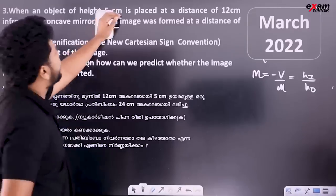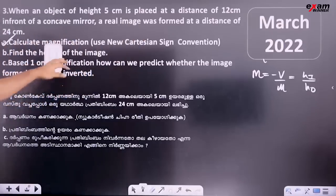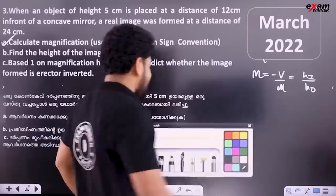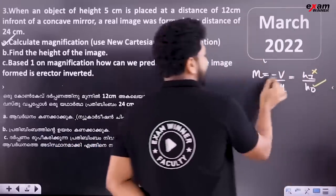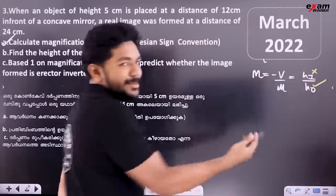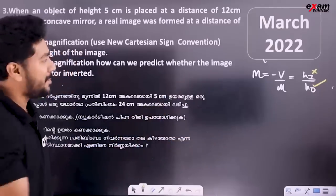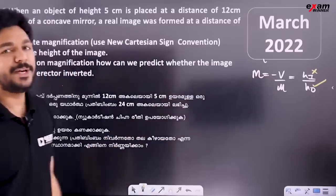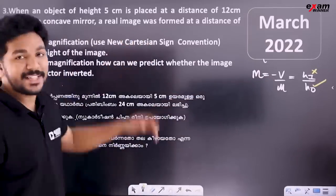When an object of height 5 cm is placed at a distance of 12 cm, we calculate the height of object. We calculate the image. We use M is equal to minus v by u. You can substitute using V by U.